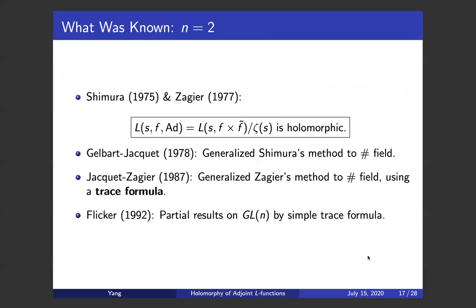Now let's talk about the known cases — the GL2 case. As we mentioned before, Shimura and Zagier proved independently that the adjoint L-function is holomorphic for GL2. They did this for classical forms. Then Shimura's method was generalized to number fields by Gelbart and Jacquet in 1978. Later, Jacquet and Zagier generalized Zagier's original proof to number fields in the setting of automorphic representations. This approach is based on a trace formula — a variant of the trace formula which we will introduce later. Flicker, years later, proved a partial result on GL_n by a simple trace formula, but this cannot imply holomorphicity for each individual adjoint L-function — it's just a family property.